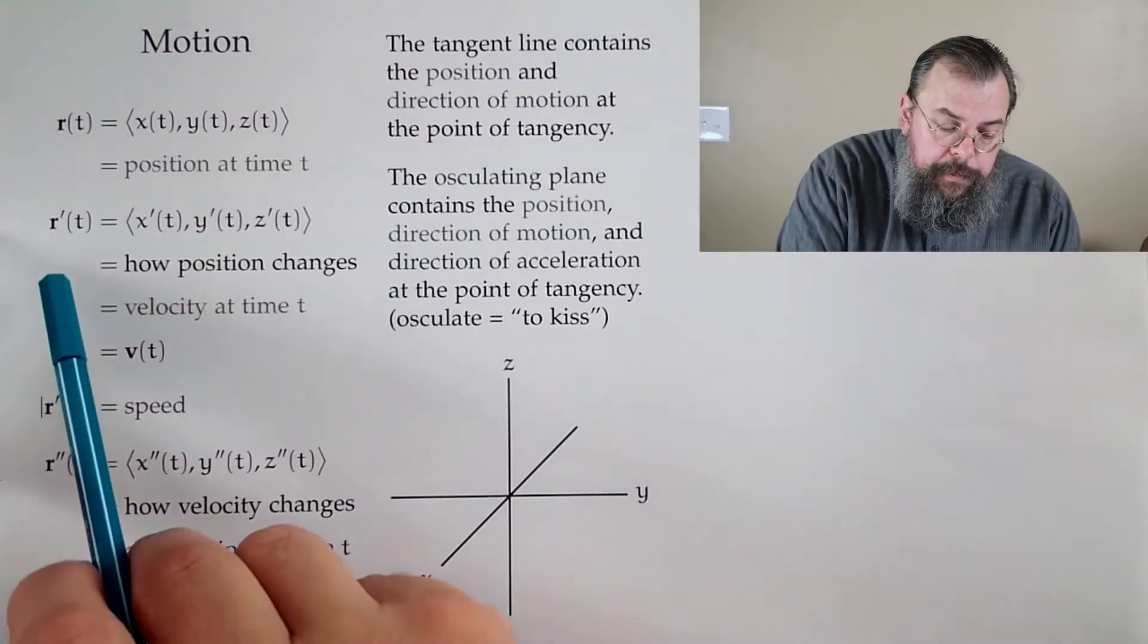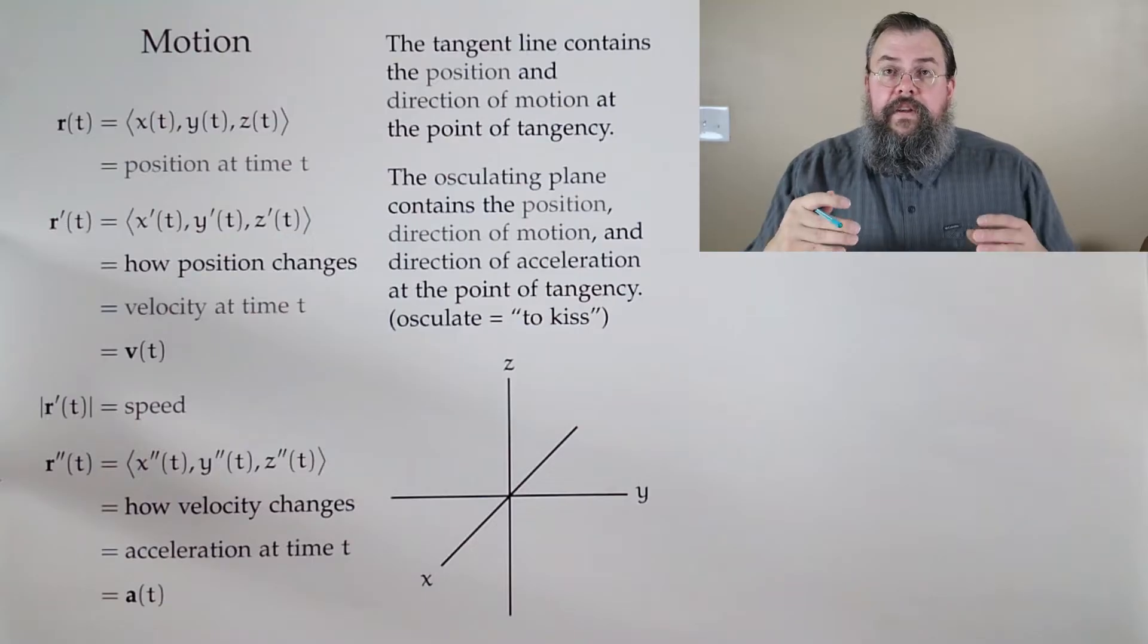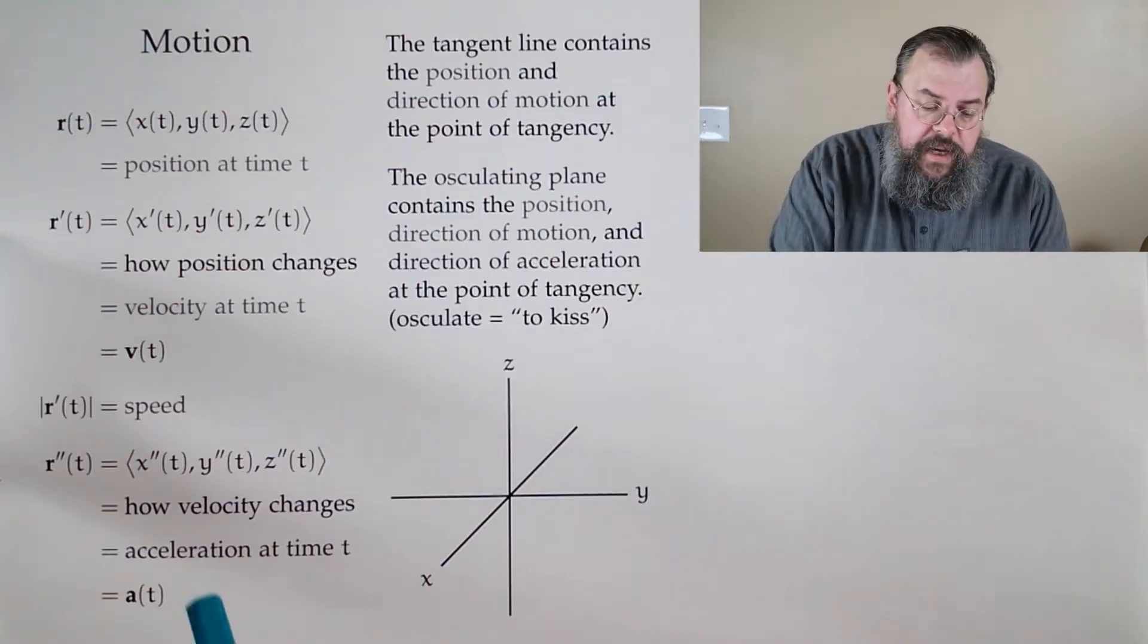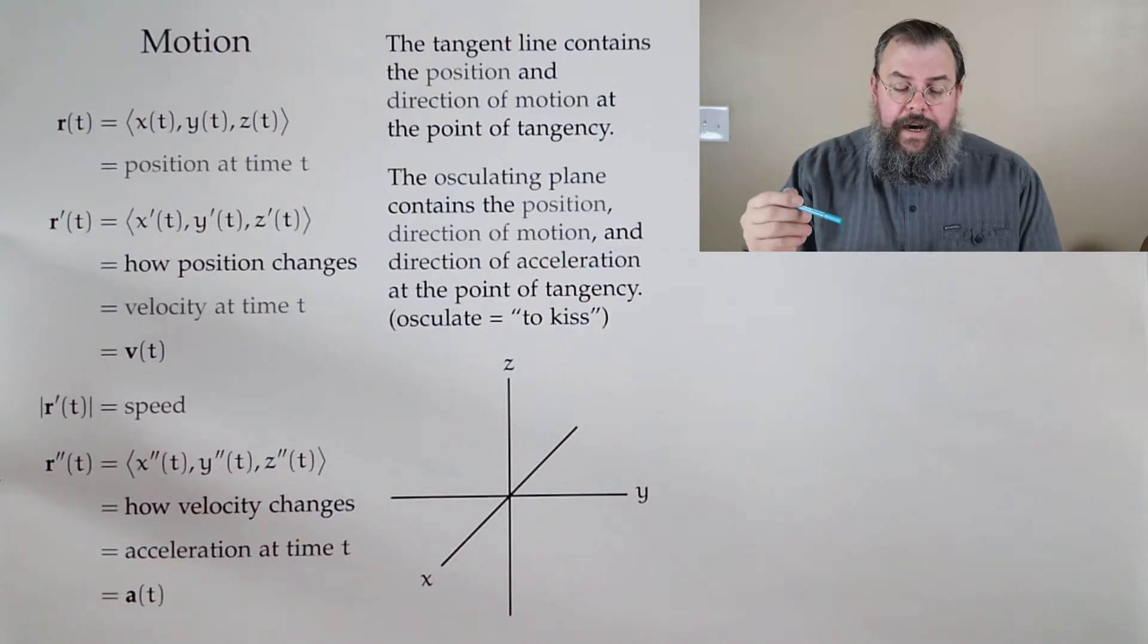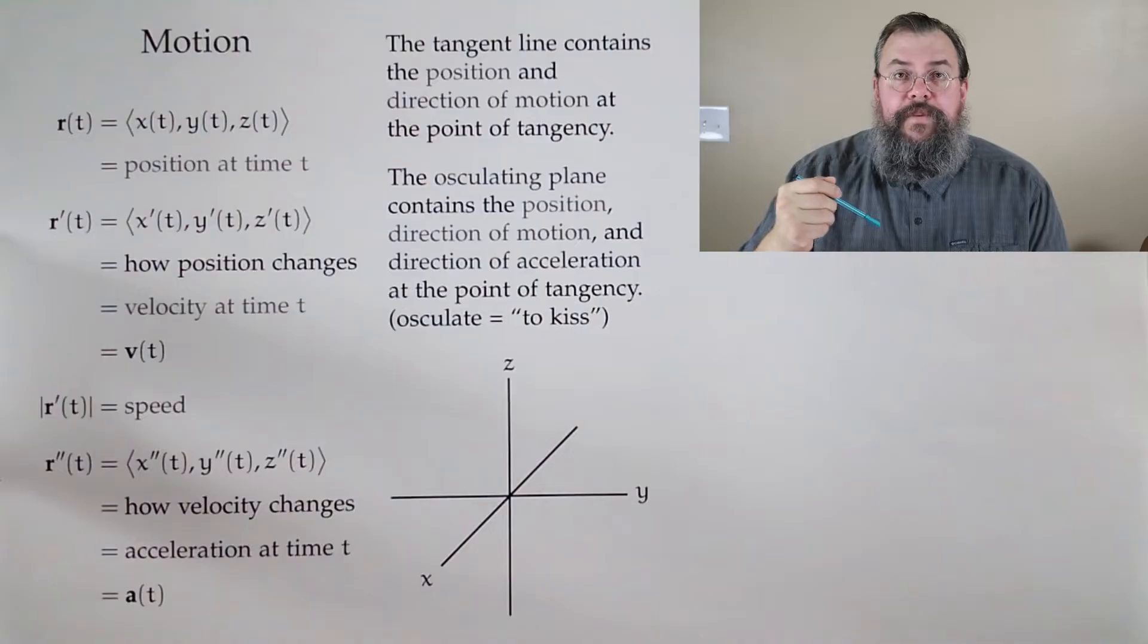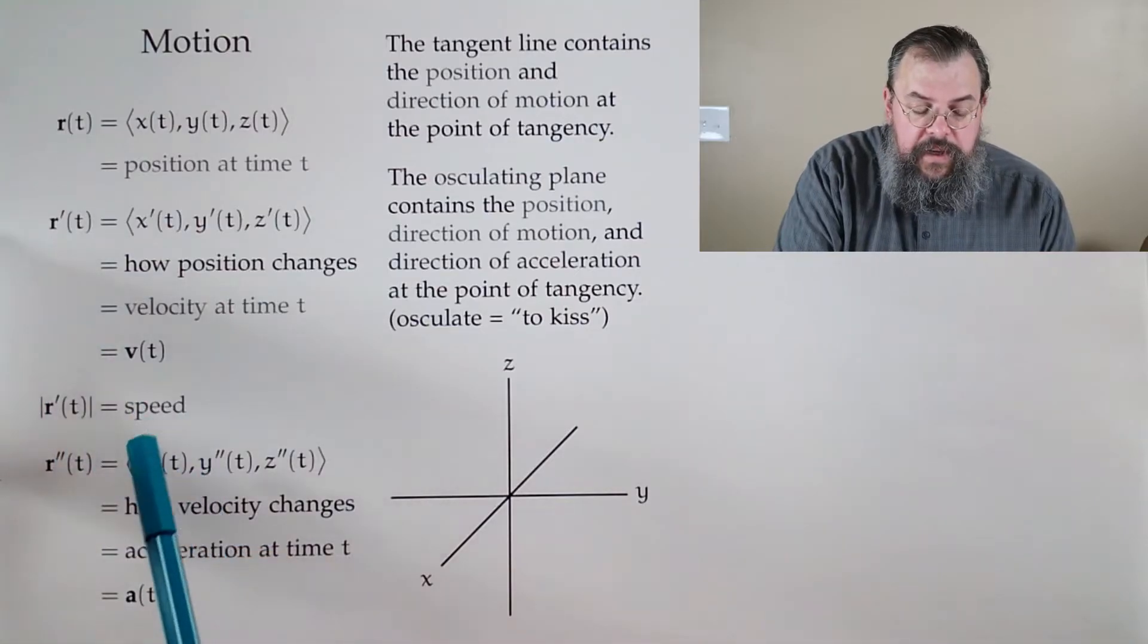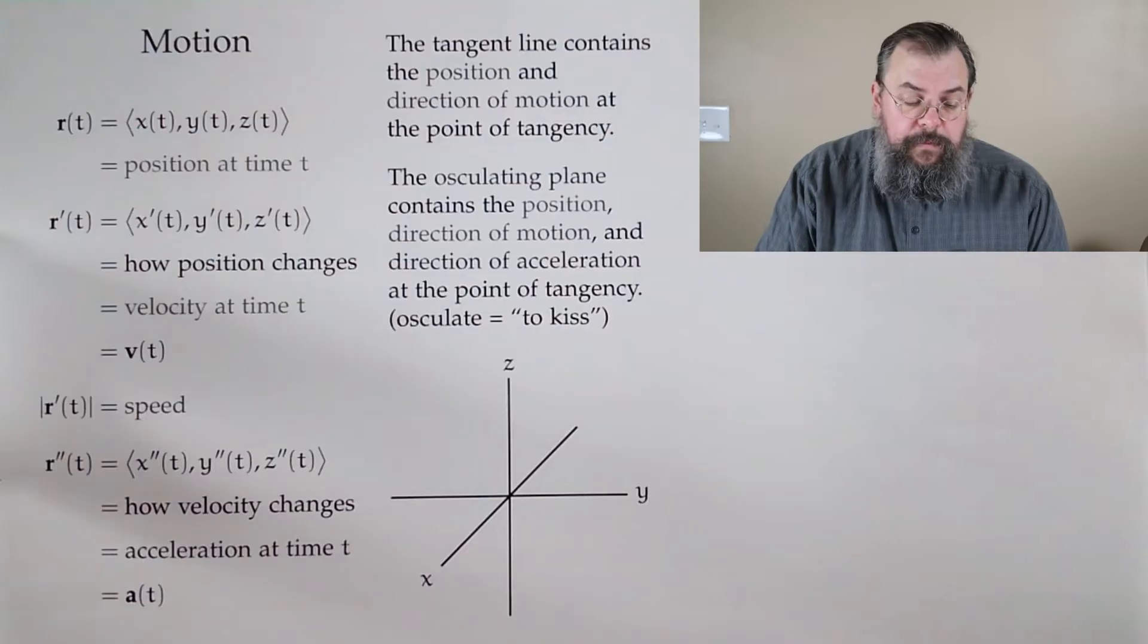Well, next up, we look at r'(t), and we talked about this before. We use that to say r'(t) gives us a direction of our tangent line. But what is r'(t) doing? Well, r'(t) is saying, how is position changing? If I want to know how my location or my position changes, there's a name for that: velocity. So r' is velocity, and we use the symbol v(t) for velocity.